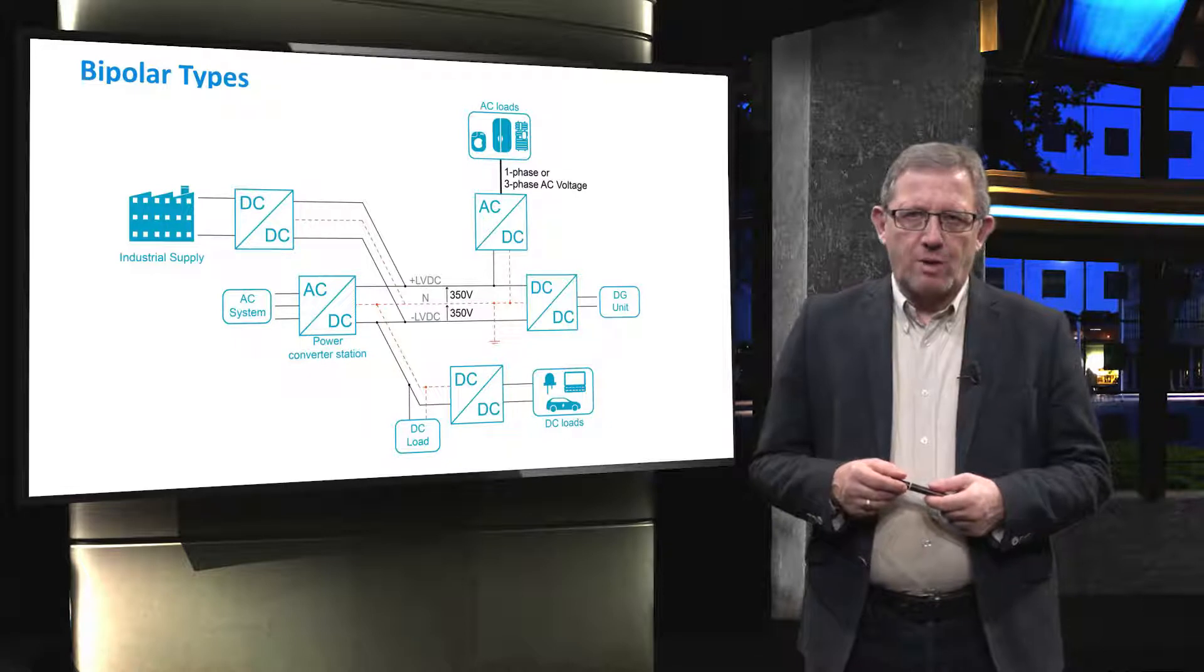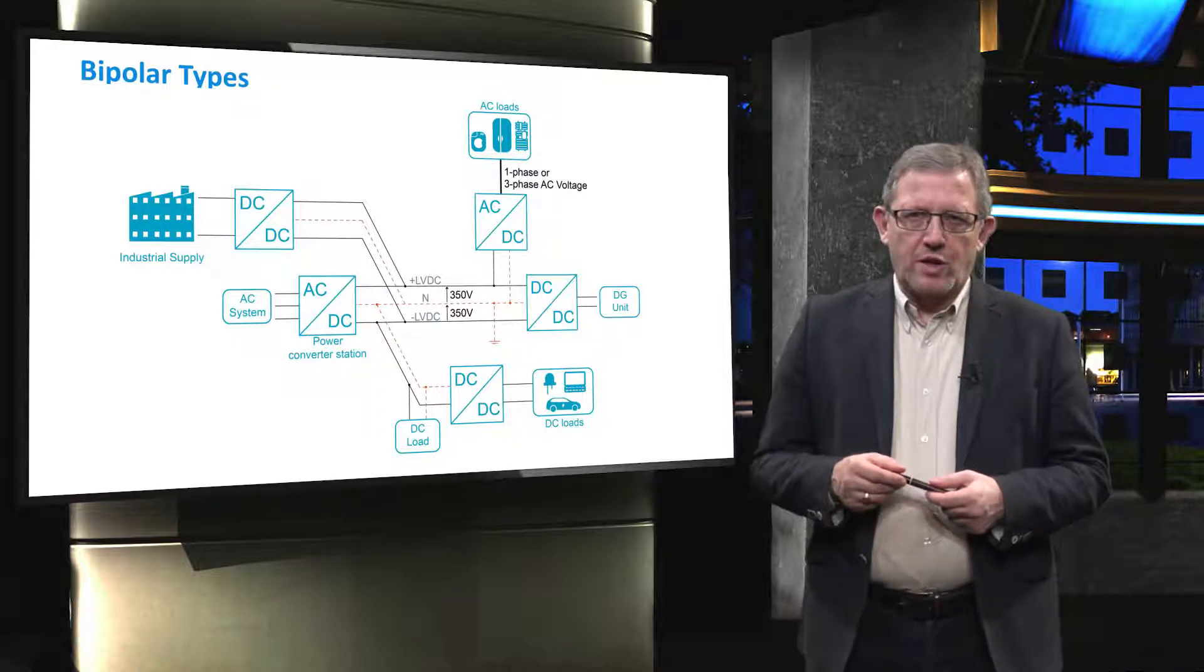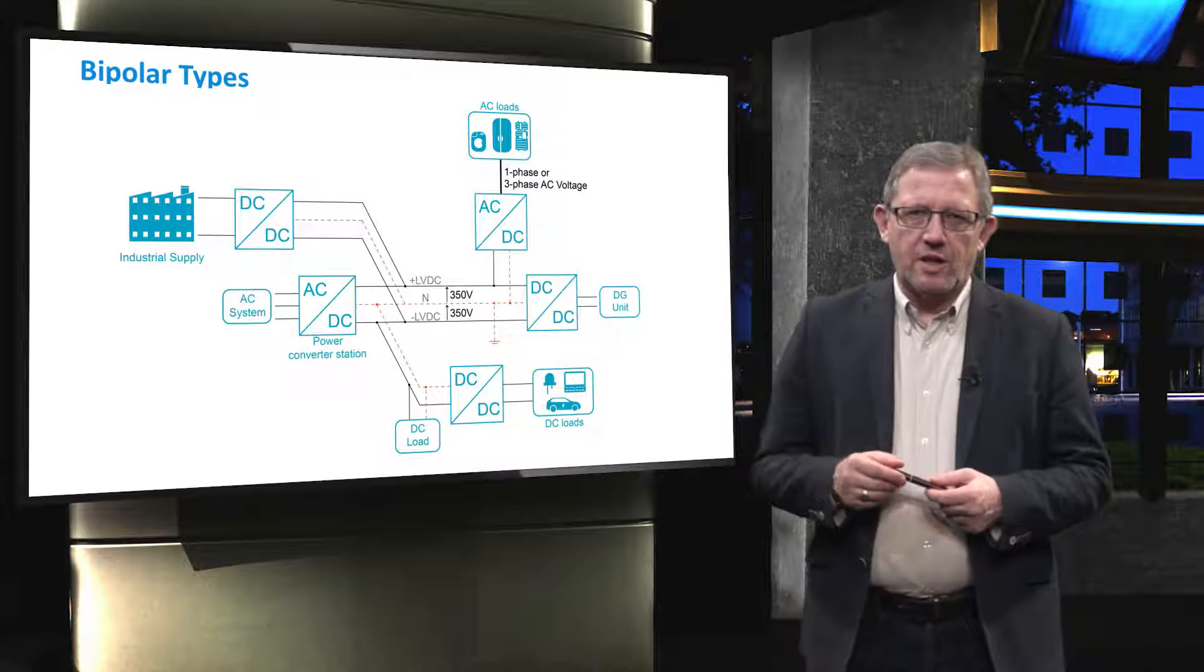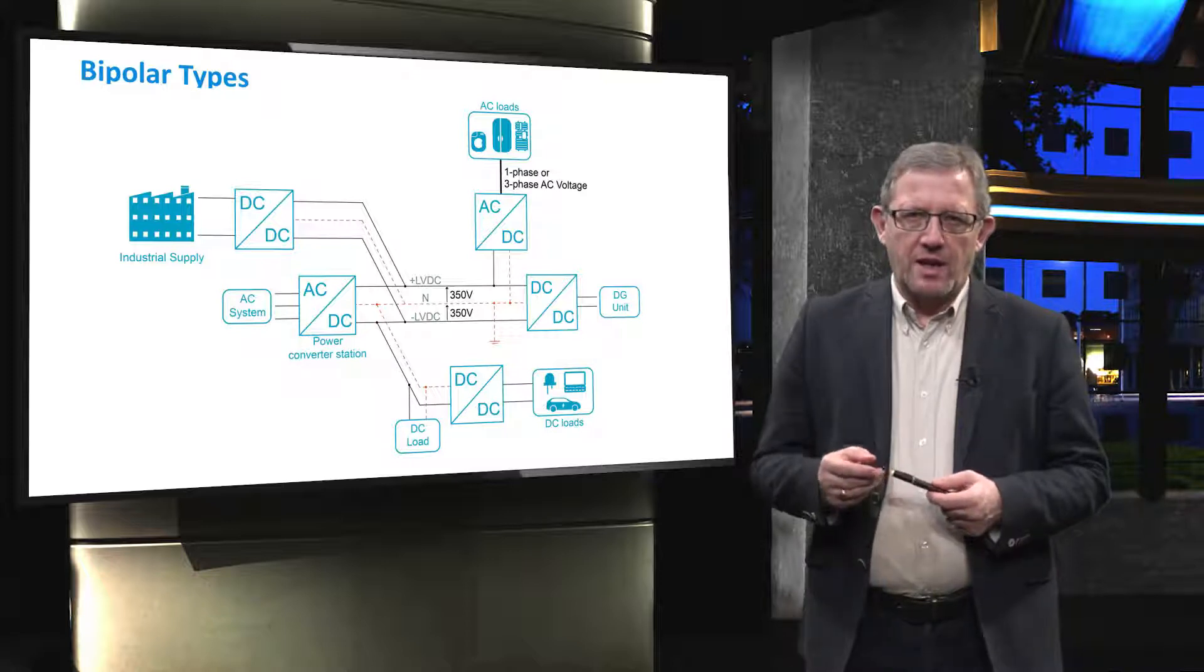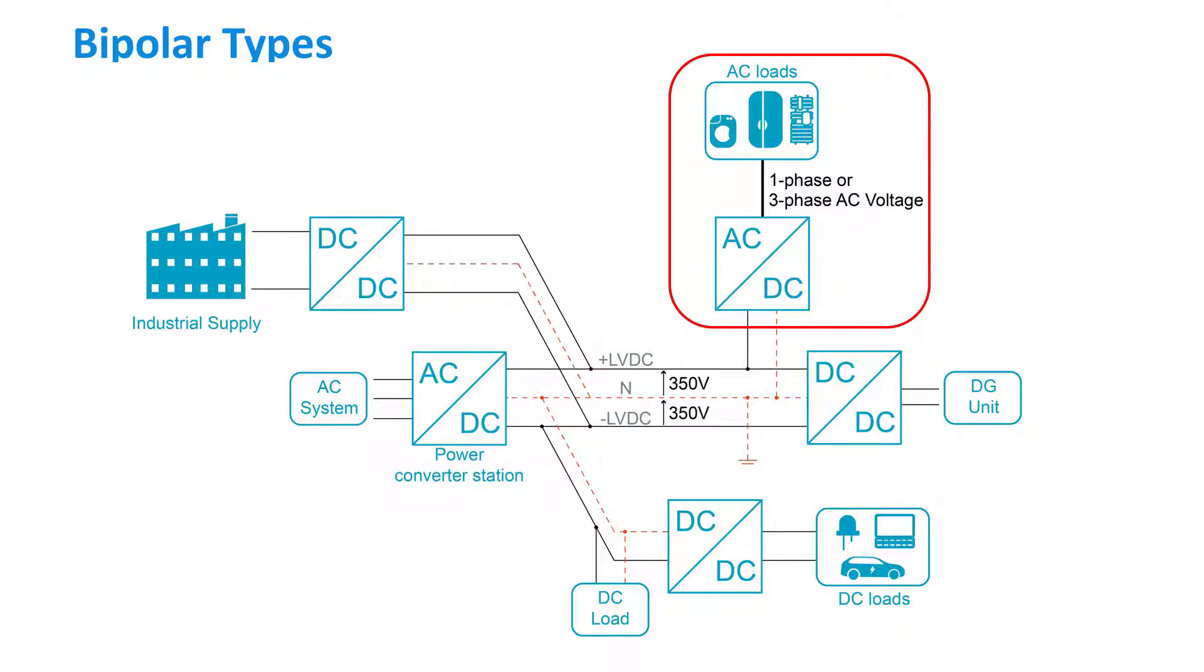This slide shows a bipolar connection type to which single or three-phase loads are connected using only one conductor and the ground. It is worth mentioning that bipolar connection can be operated as monopolar in the case of faults on one of the conductors. However, the amount of delivered power is reduced by half. The bipolar type is indeed the most versatile but also the most expensive connection type. This is especially due to the power converter and isolation.